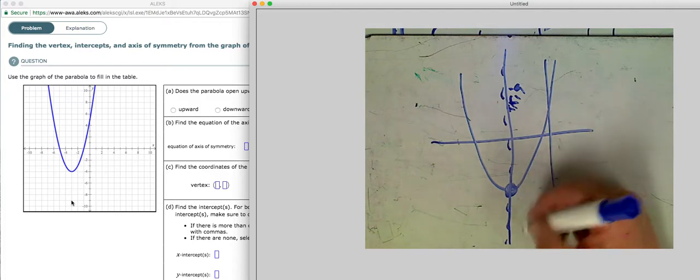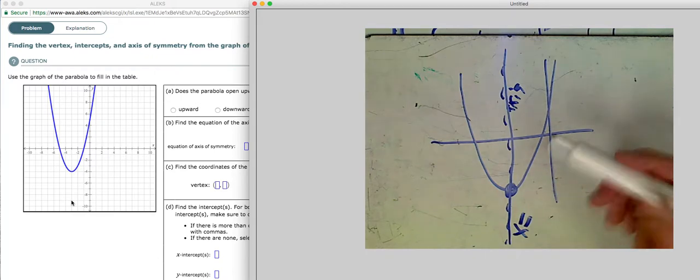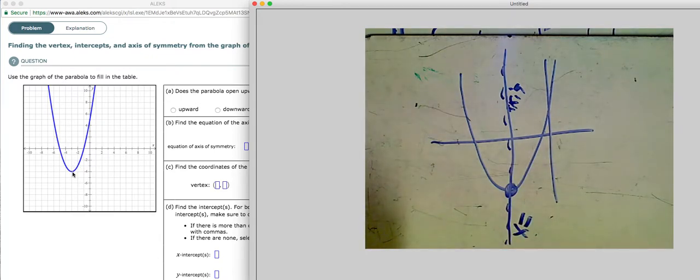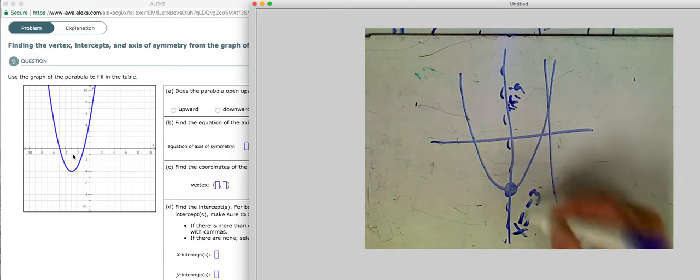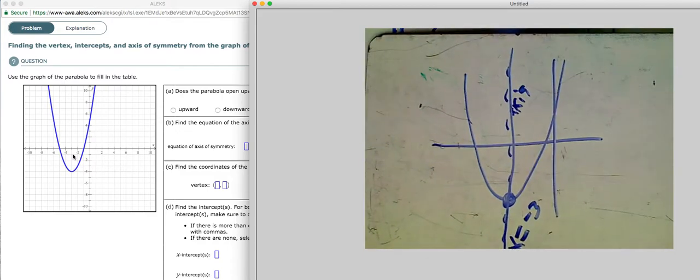And as we know, vertical lines have equations that are x equals. So every time, that axis of symmetry right here is going to be the x, it's just going to be x equals, and then whatever the x-coordinate of the vertex is. So in this case, it's just x equals negative 3, like that.